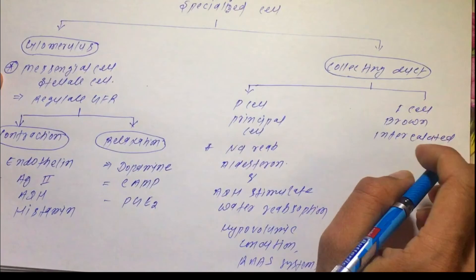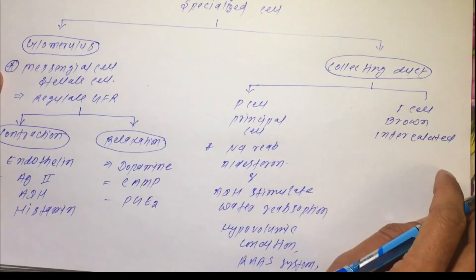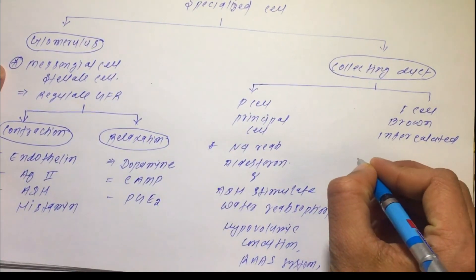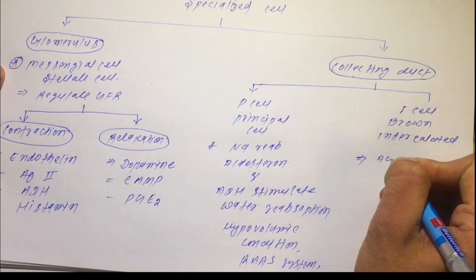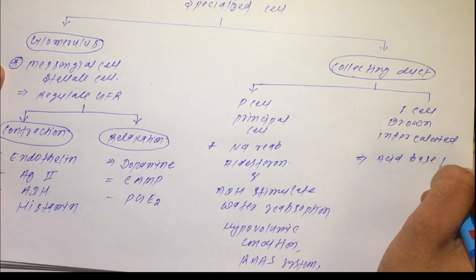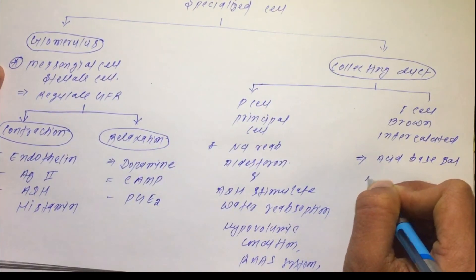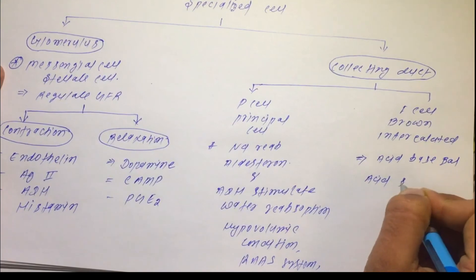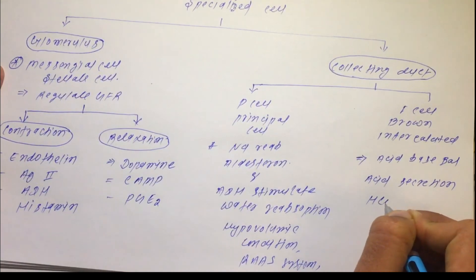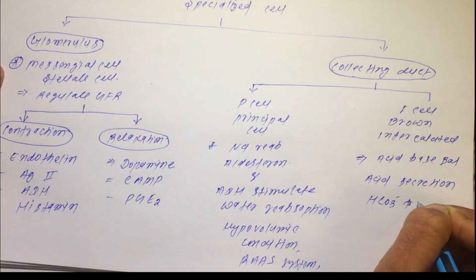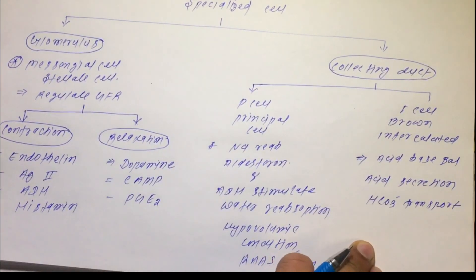This acts as a compensatory mechanism in the RAS system. Now, the I cell — the intercalated cell — is a very important cell in the nephron because it is concerned with the acid-base balance. It is involved in acid secretion and bicarbonate ion transport.